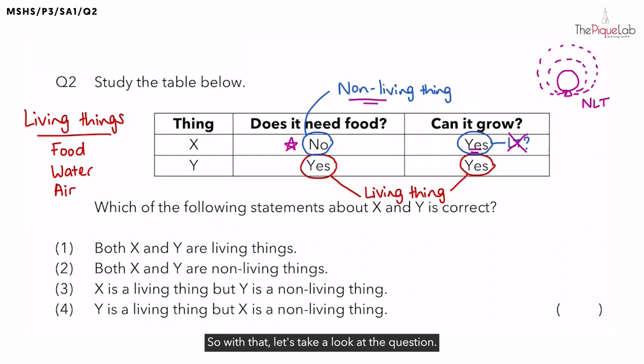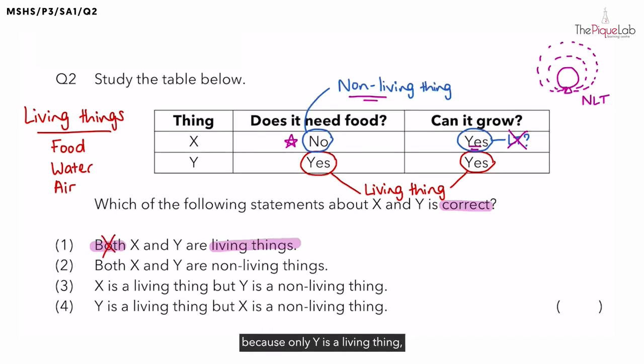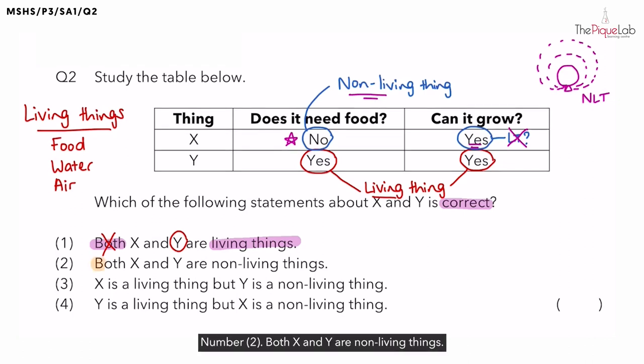So, with that, let's take a look at the question. Which of the following statements about X and Y is correct? Number one, both X and Y are living things. Is this statement correct? No, this is wrong because only Y is a living thing as we identified earlier. Number two, both X and Y are non-living things. This statement is wrong as well because only X is a non-living thing.